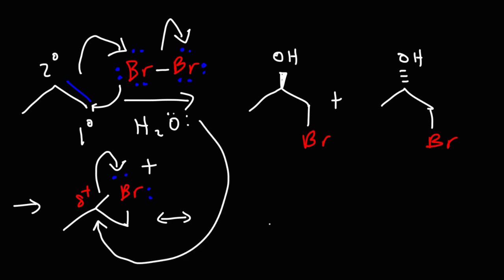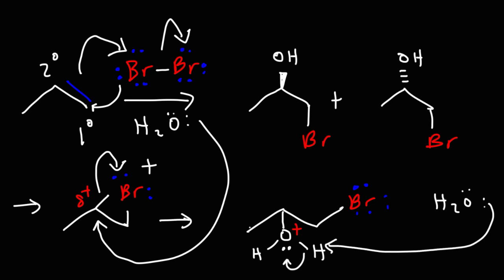So when this happens, we're going to get this intermediate for now. And then we're going to have the water molecule here. And the oxygen is going to have a partial positive charge. Now what we need to do is use another water molecule to act as a weak base and abstract this proton. And this will give us the halohydrin product, which contains a hydroxyl group and a bromine atom. So that's the mechanism for this reaction.